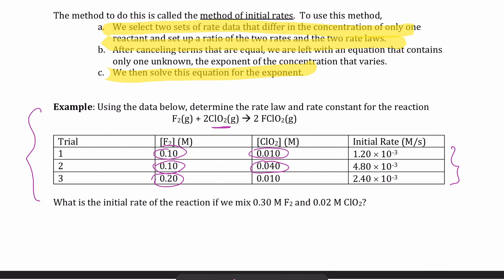The question becomes: how do we determine the order and the rate constant from this data? In this specific problem, we're also asked: what is the initial rate if we mix 0.3 molar of F₂ and 0.02 molar of ClO₂? We should be able to get the answer once we have the rate law for the reaction. Let's figure out how to solve this.